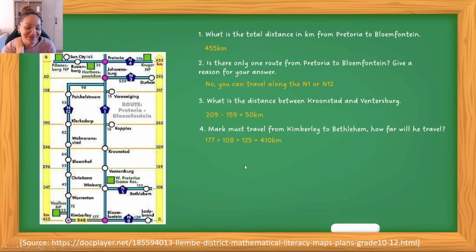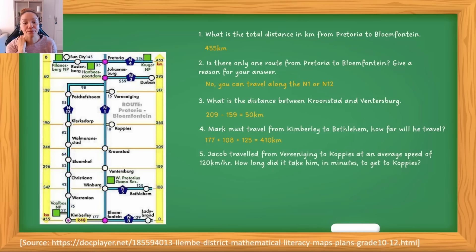Last question, number five: Jacob traveled from Vereeniging to Koppies at an average speed of 120 kilometers per hour. How long did it take him in minutes to get to Koppies? This is where they are combining your ability to understand strip maps and also speed, distance, and time. They want to know how long it took, so they want us to calculate time. Time is always distance divided by speed. So to calculate time, we need to know the distance and the speed. The first thing we're going to calculate is the distance.